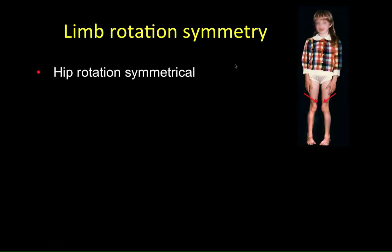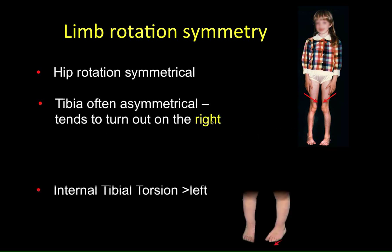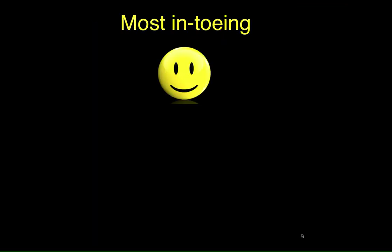First of all, let's consider limb symmetry. We know that hip rotation is generally symmetrical, whereas the lower limb and the tibia and foot tends to be asymmetrical — we tend to turn to the right. So internal tibial torsion will generally be on the left side of the child, whereas external tibial torsion is generally on the right side. This is a clear drift to the right side, which is a human characteristic.